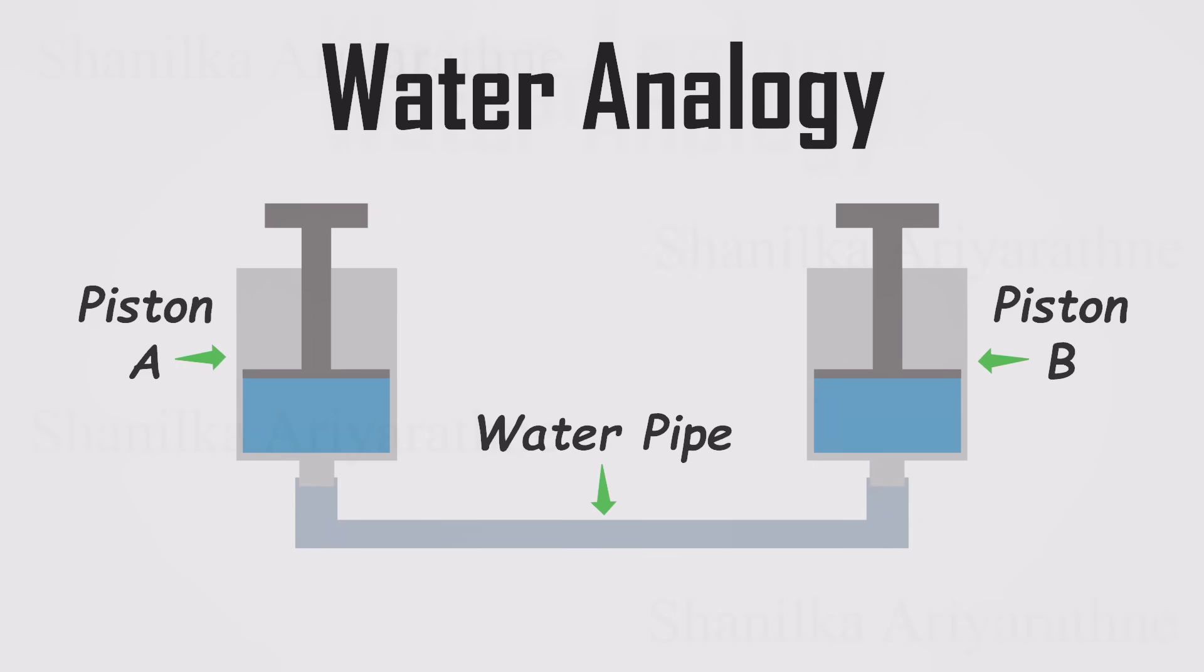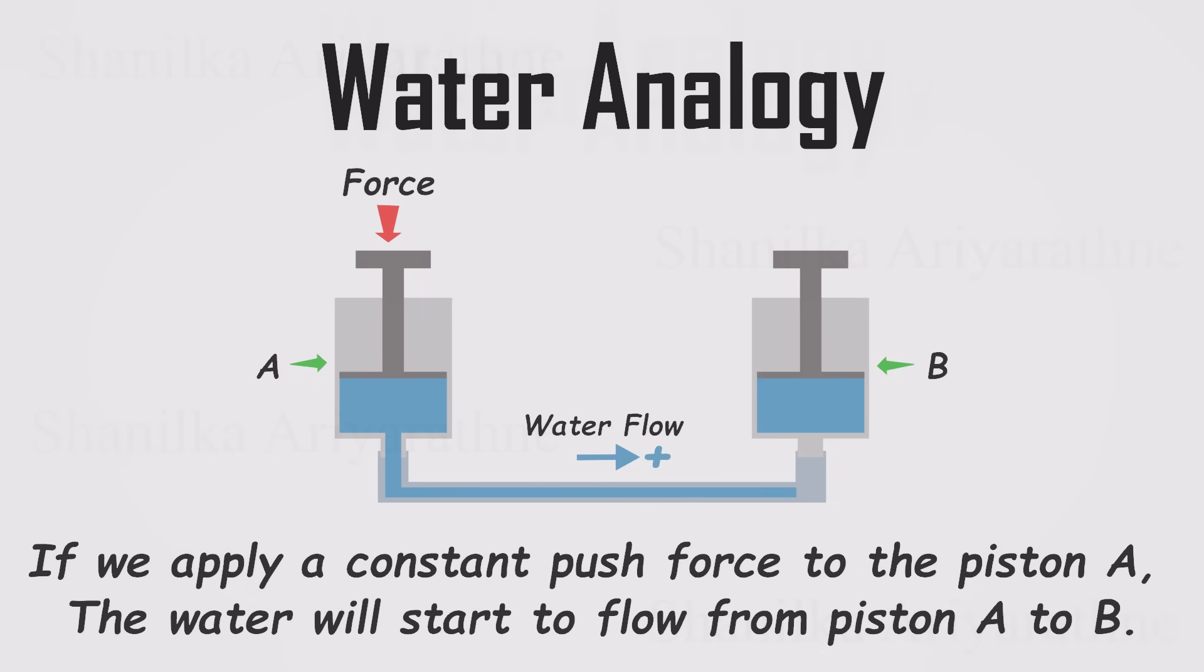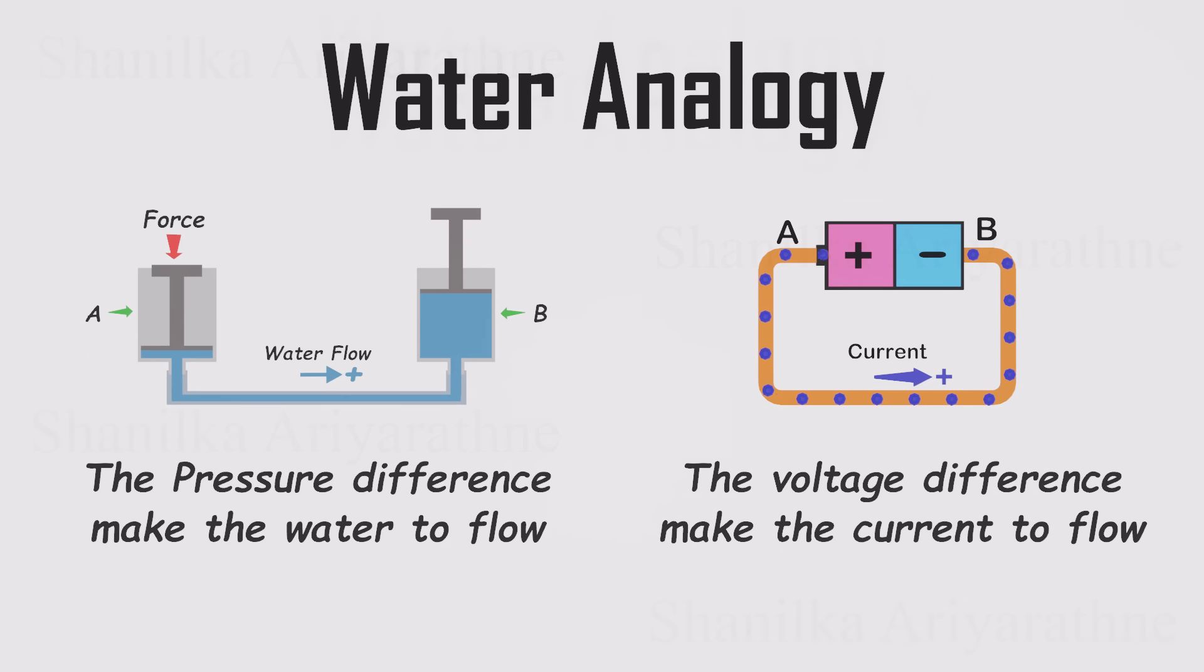Let's try to make sense of this behavior with a water analogy. Imagine two pistons, each half full of water, connected by a pipe. If you push down on piston A, water flows through the pipe into piston B. Why? Because your push increases the pressure in piston A, and water naturally moves from high pressure to low pressure. The same thing happens in an electrical circuit. A battery has two terminals, positive and negative. The positive side is at a higher potential, and the negative side is at a lower potential. Connect them with a wire, and current flows from positive to negative. And just to clear up a common detail, in reality, electrons move the other way, but by convention we say the current flows from positive to negative.